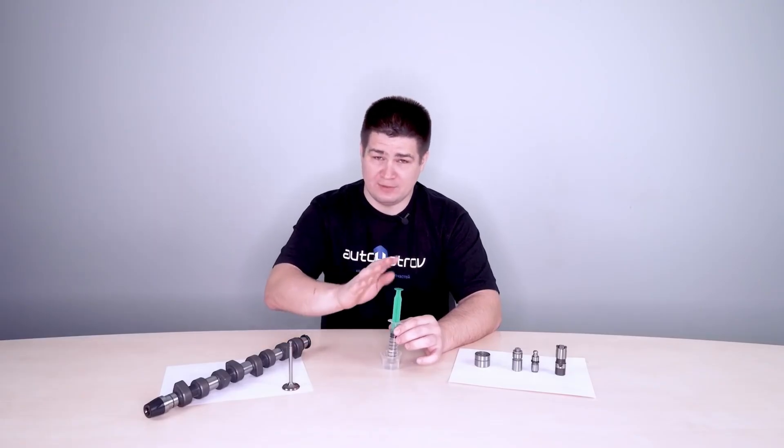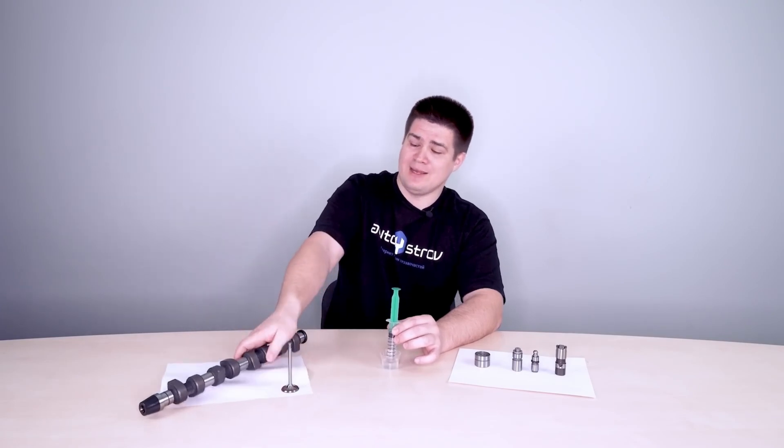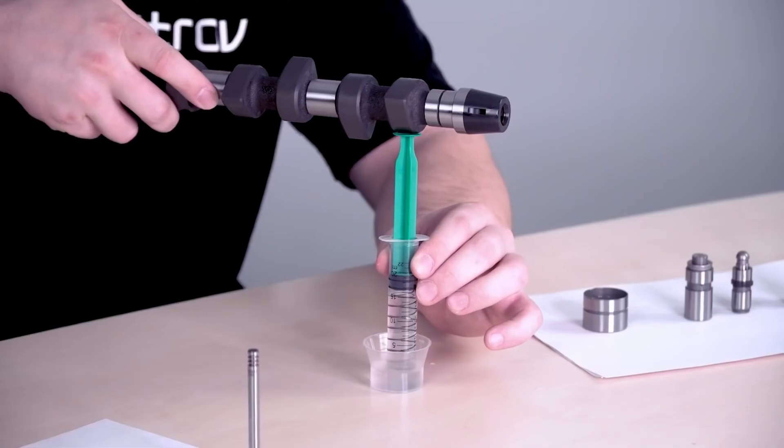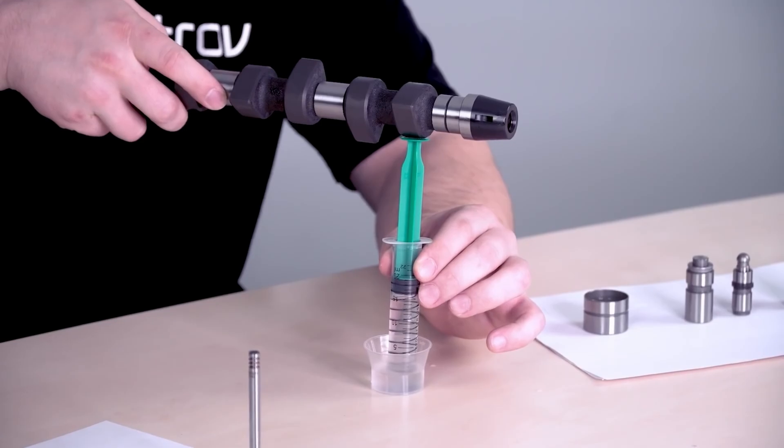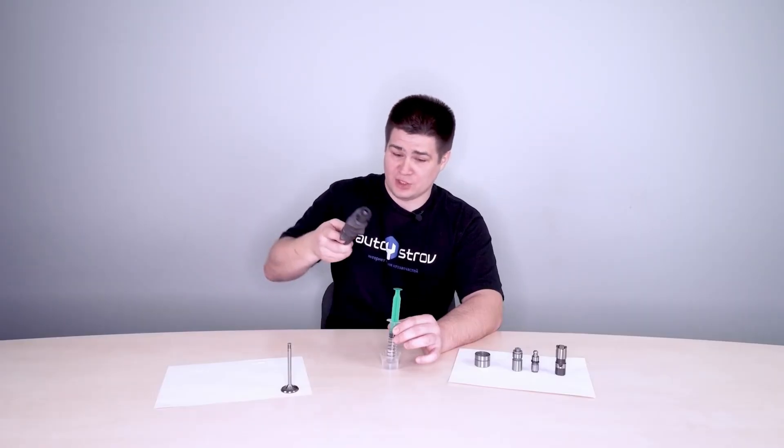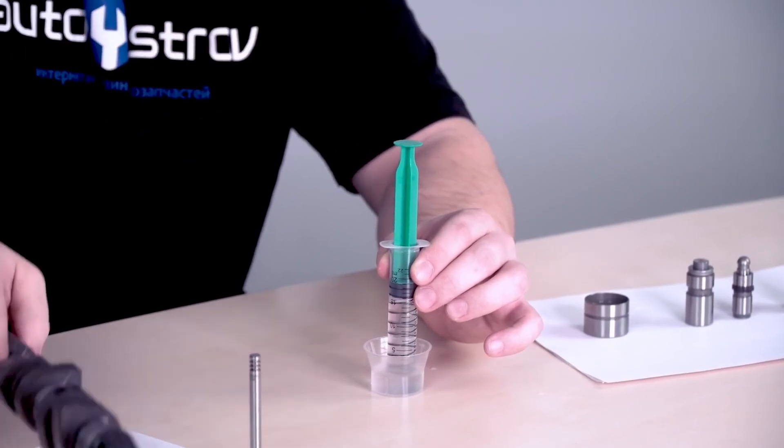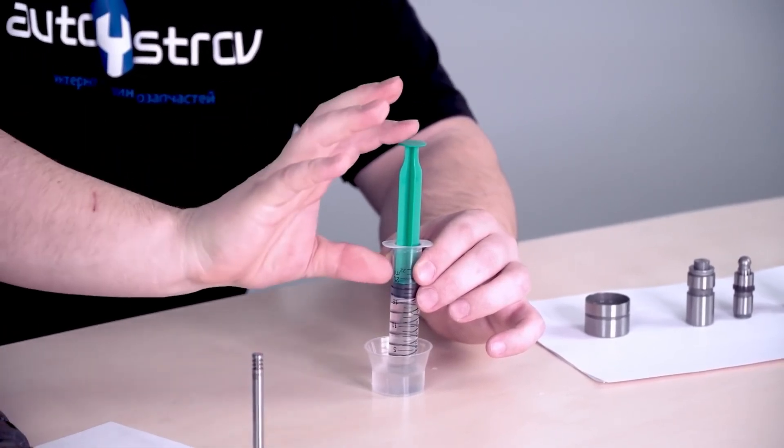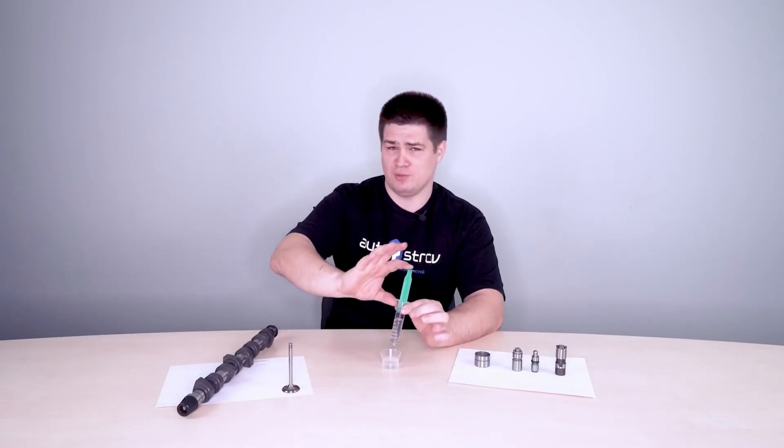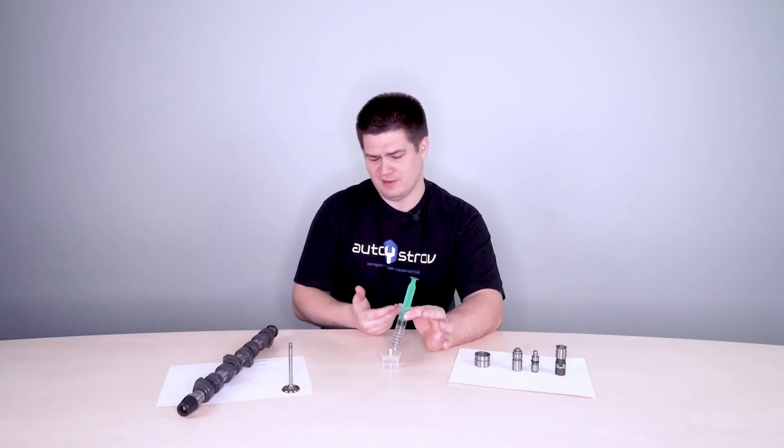So now that we have zero valve clearance while the camshaft and hydraulic lifter are in those positions. So when the shaft turns and the cam presses on the valve itself, we must maintain this position of a tappet. It's not clear how it stays this way, because if we press the syringe, the water will pour out. How are we going to maintain it?